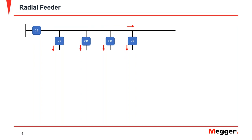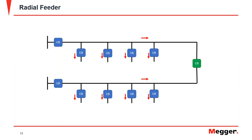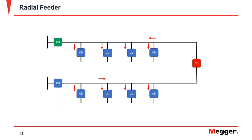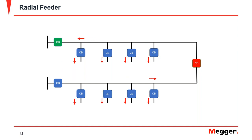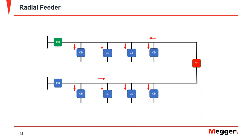A disadvantage of radial feeders is that when the main circuit breaker opens, all loads connected to the same feeder lose their power supply. One way to address this is connecting multiple feeders with normally open ties. If one feeder loses power, the tie can be closed to reconnect and provide power to customers on the second feeder. We will see these schemes in the distribution feeder automation discussion at the end.